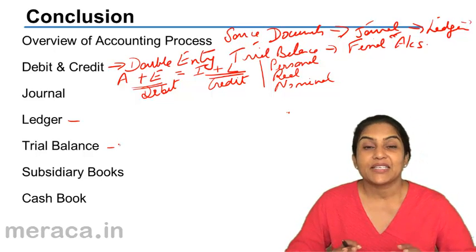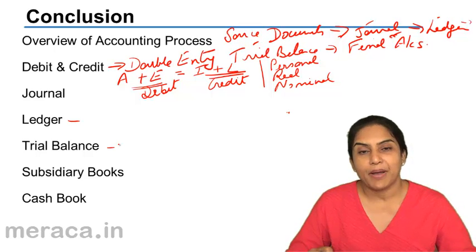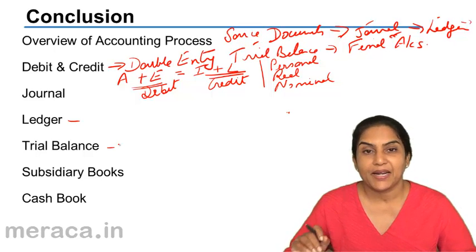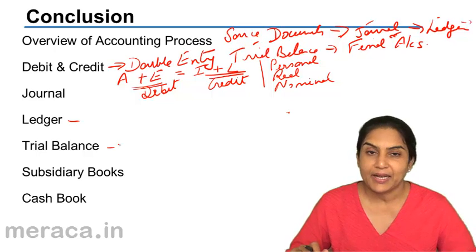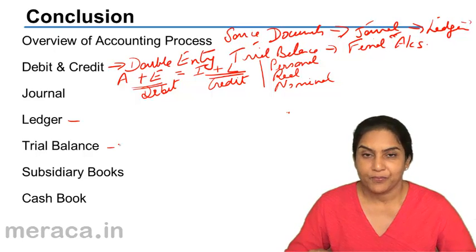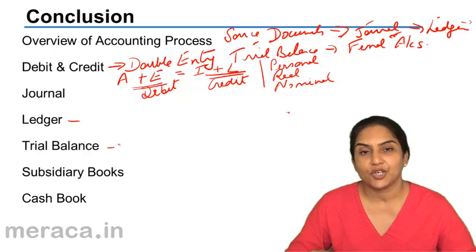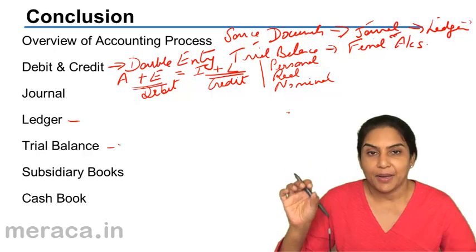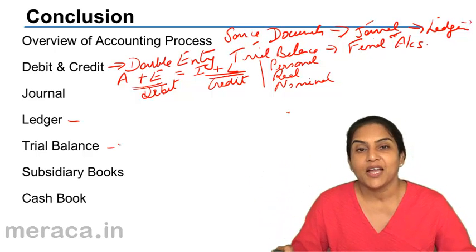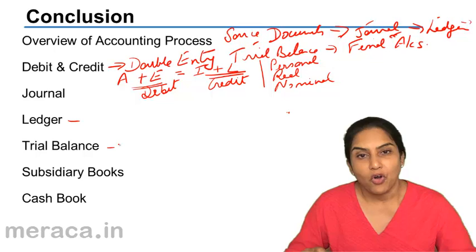The trial balance is nothing but a statement. It is not an account. It is a statement which contains all the ledger account balances, debit and credit. Since the ledger accounts are prepared following the principles of double entry, debit total and the credit total of the trial balance would be equal. Though trial balance can be prepared under the balance method, total method and total and balance method, the most popular method is to take the balances. That is, it has debit balances and credit balances of the ledger accounts. It becomes a statement wherein we can view the balances of all ledger accounts.